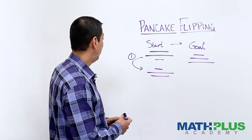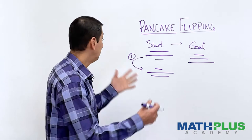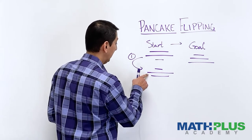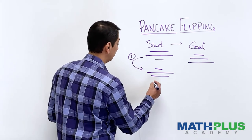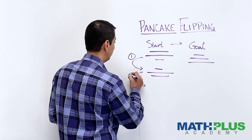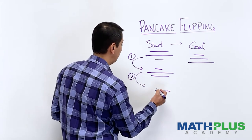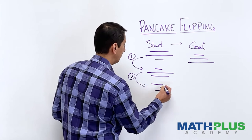Okay. I don't even know what to do. Maybe I'll flip again, right here between these two. So if I do that, where will I end up? I'll have the medium one on the bottom, the small one, and then the big one.